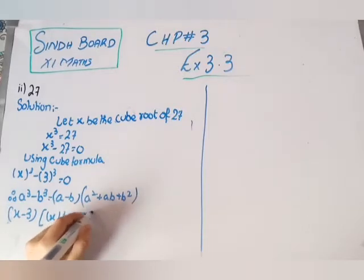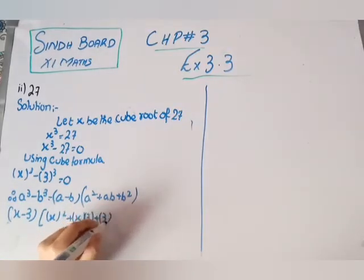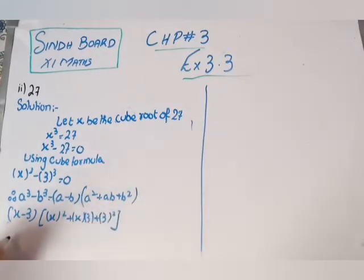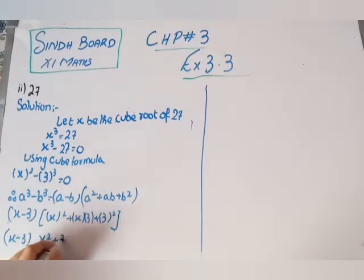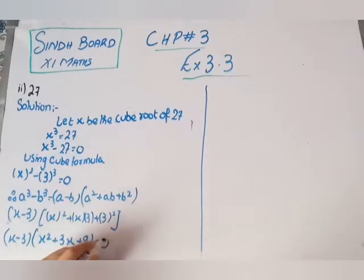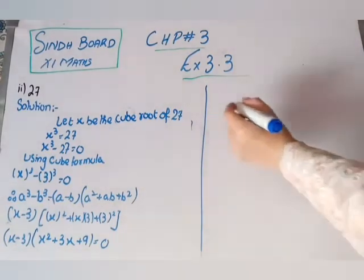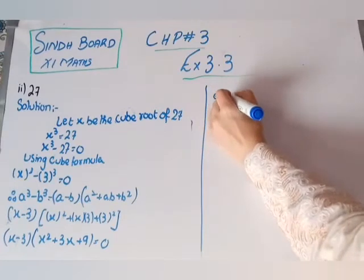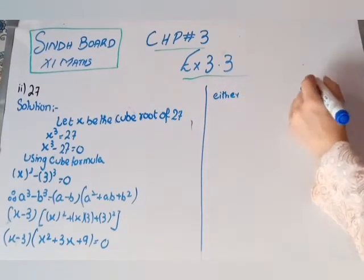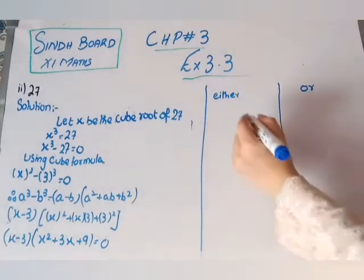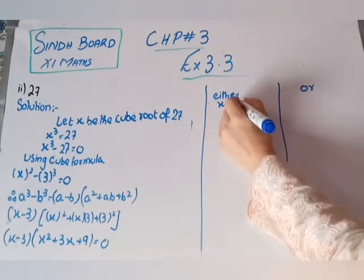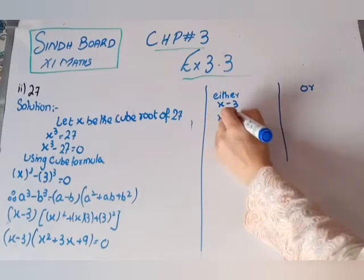We have (x minus 3)(x squared plus 3x plus 9). Here we have x minus 3, and inside the bracket x squared plus 3x plus 9. Now we solve it: x minus 3 equals to zero, which gives us x equals to 3.